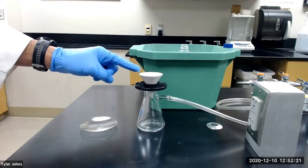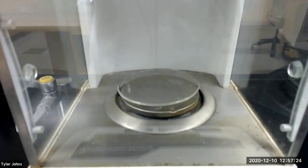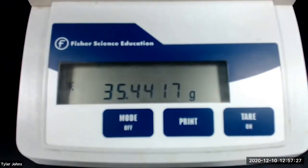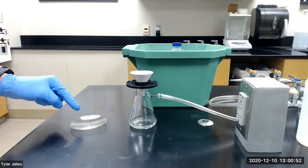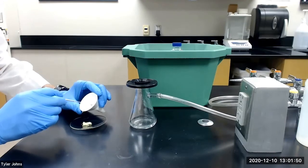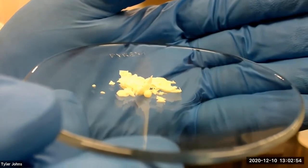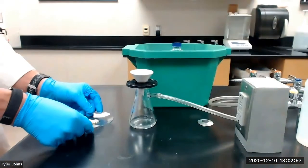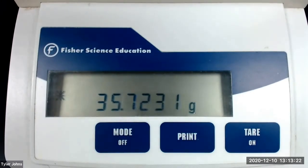While the crude benzil product continues to dry, we will pre-weigh a watch glass. The mass of the pre-weighed watch glass is 35.4417 grams. We will next collect the crude benzil product on the pre-weighed watch glass. The mass of the pre-weighed watch glass and the crude benzil is 35.7231 grams.